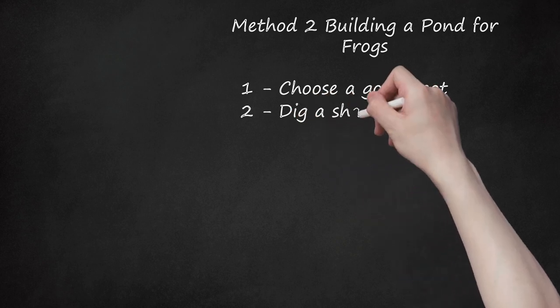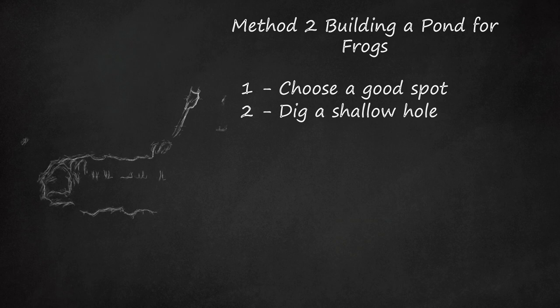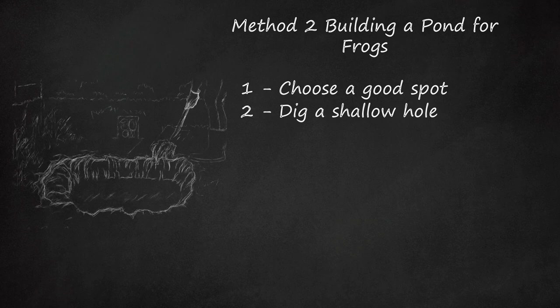2. Dig a shallow hole. Frog ponds can be as wide as you want, but they should be no more than a foot, or about 30 cm, deep. Be sure that your hole has shallow edges in it so that the frogs can enter and leave easily. Remove any roots, sticks, or stones that could damage the liner.